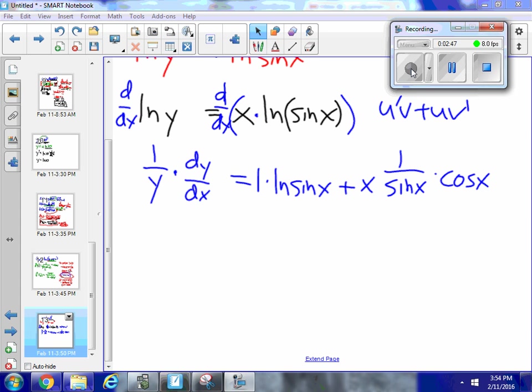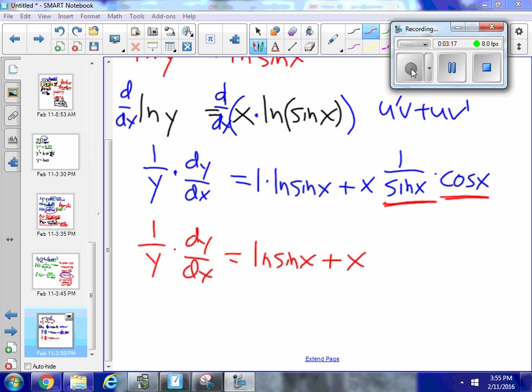So now let's simplify it a little bit. I still have 1 over y times dy dx. And that is equal to 1 times the natural logarithm of sine x is just ln sine x plus x. And I have here 1 over sine x times cosine x. Well, that's the same thing as cosine x over sine x. So that is x cotangent x. So that's a little bit simpler.